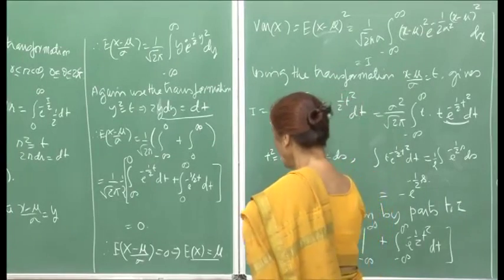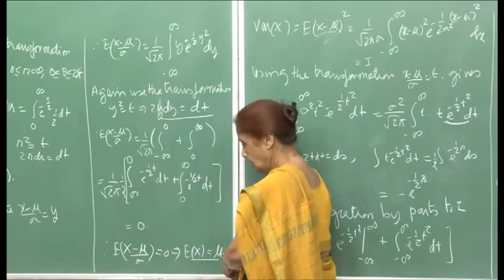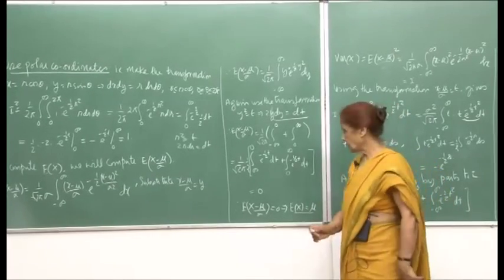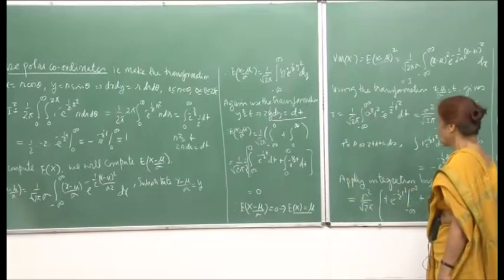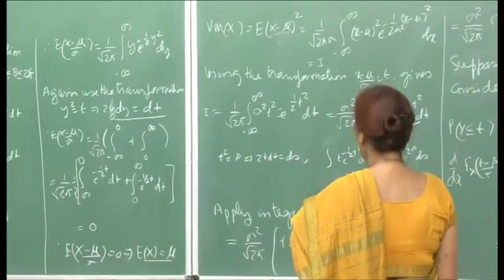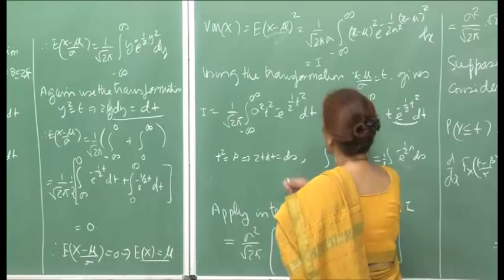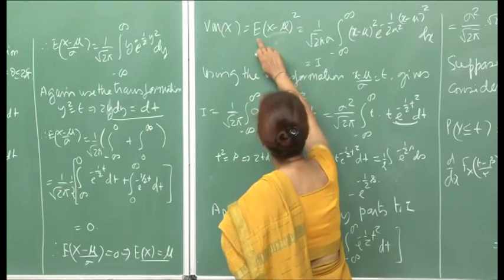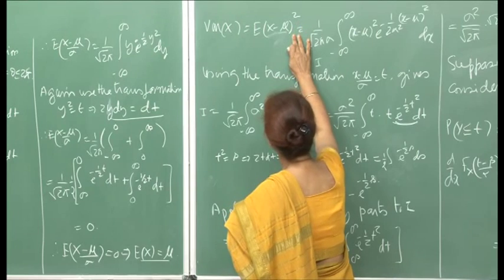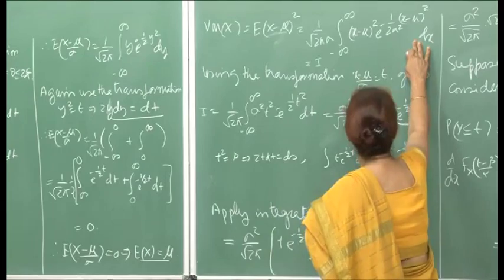I had shown you that the normal PDF is symmetric about μ, and this is also the mean. In fact, μ has all the properties. Later on, I will show some more properties of μ. Similarly, to compute the variance of x — since μ is the mean — it is actually expectation of (x − μ)².